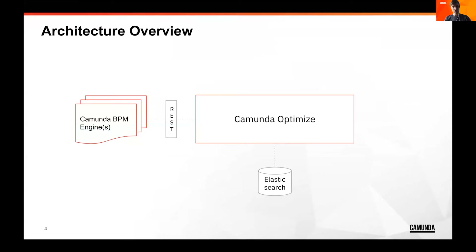As you can see, this is the architecture I just mentioned. Optimize can run via Docker images or as a Java distribution, connect it to an Elasticsearch instance in the cloud or a local cluster, and then configure one or multiple Camunda REST engines.